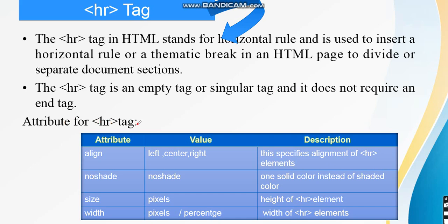The attributes for the HR tag are: align, noshade, size, and width. Size is used to give the height of the HR element. Width is used to give the width of the HR element. Noshade gives one solid color instead of a shaded color, and align specifies the alignment of the HR element.